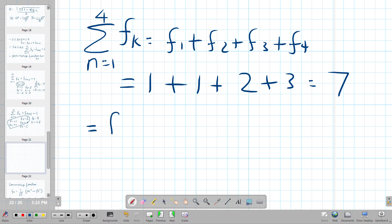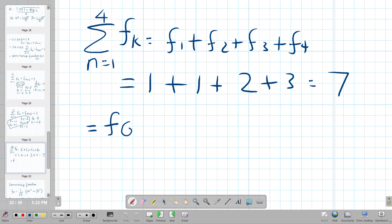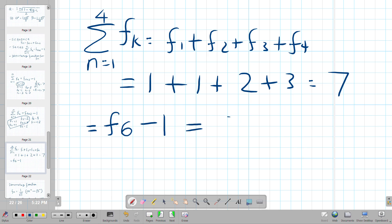Well that also equals F of, if we started with N being four, it should be F of six. Right? Should it be F of six minus one? And we said F of six was eight. Sure enough, eight minus one equals seven.